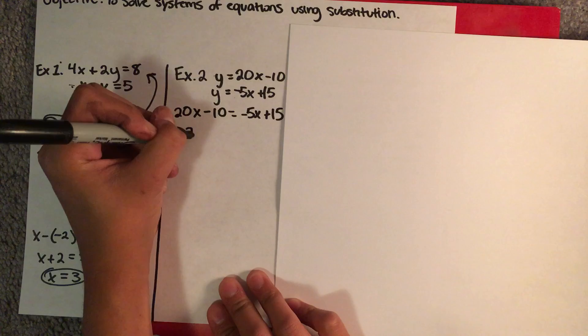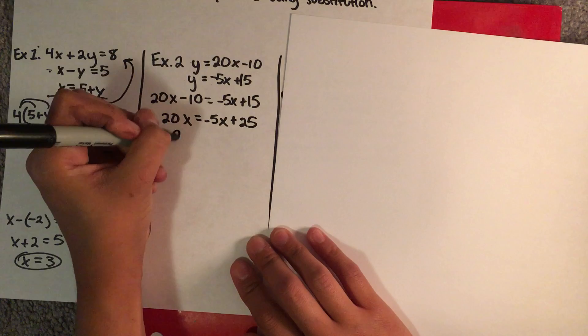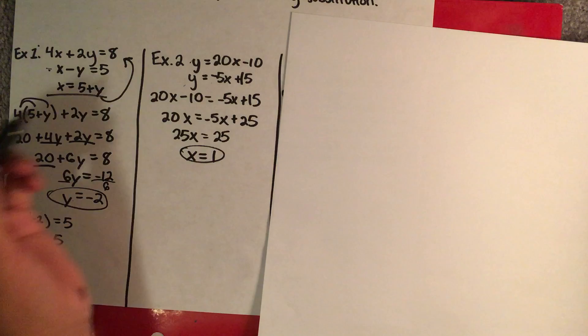You have 20x minus 10 is equal to negative 5x plus 15. You add the 10 over, so you have 20x is equal to negative 5x plus 25. You add your 5x over, you have 25x is equal to 25, so x equals 1.